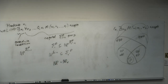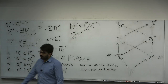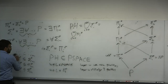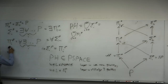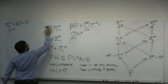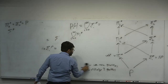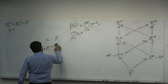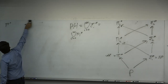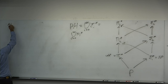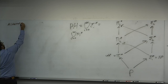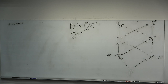We have a third definition of the polynomial time hierarchy — a more algorithmically defined one. What happens if you have both non-determinism and co-non-determinism? We define what's called an alternating Turing machine.